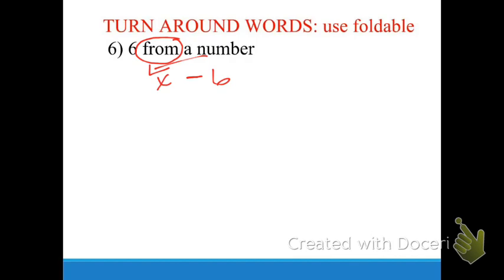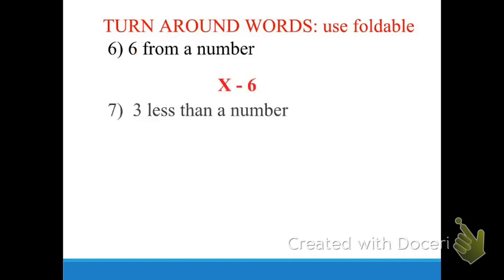Let's do the next one: 'three less than a number.' What are the turnaround words in this one? Less than. Circle 'less than.' So what goes first — three or the number? The number, which is the variable, which is X. X subtract three. That one is X minus three.